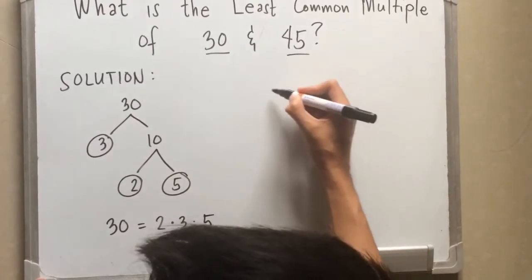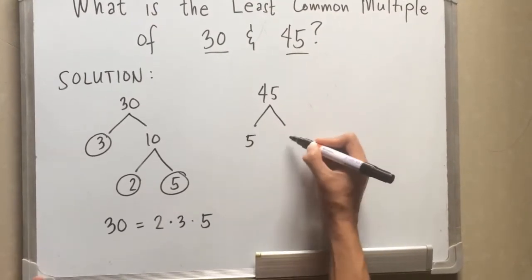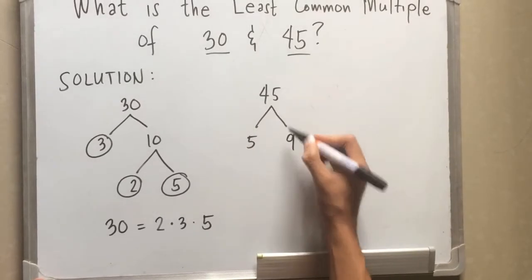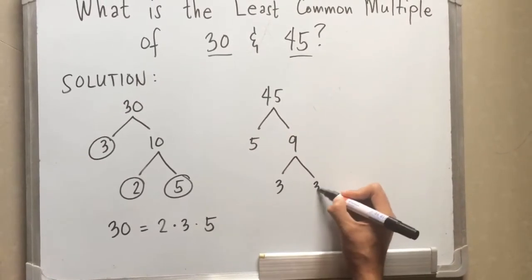Now we are going to solve for the factors of 45. We have 5 and 9. 5 times 9 is equal to 45. We can still have 3 and 3 as factors of 9.